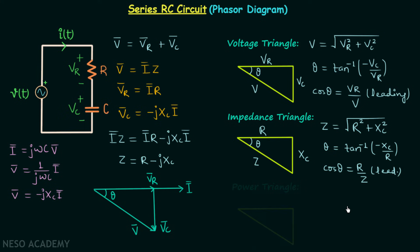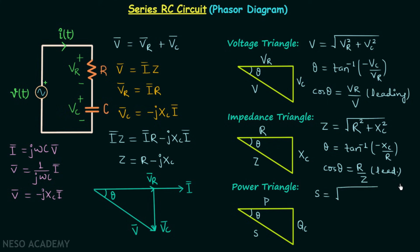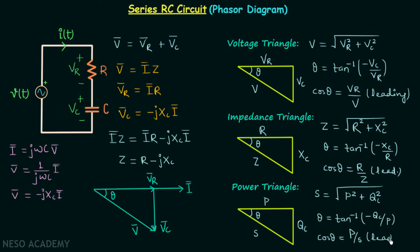For the power triangle, the angle is theta, the base is real power P, one side is reactive power QC, and the hypotenuse is apparent power S. The apparent power S equals √(P² + QC²), theta equals tan⁻¹(−QC/P), and the power factor cos theta equals P/S. It will be leading.